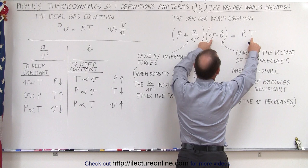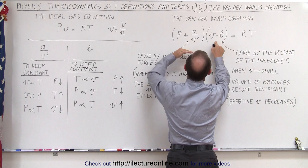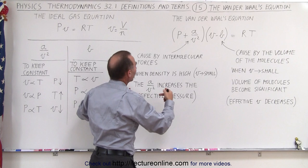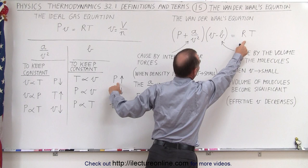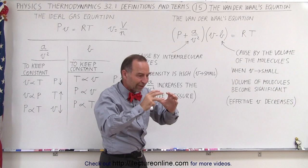If we keep the temperature and the volume constant, this will reduce this term, which means it will cause the pressure to go up. So the pressure will go up as a response to the volume of the molecules when you want to keep volume and temperature constant.